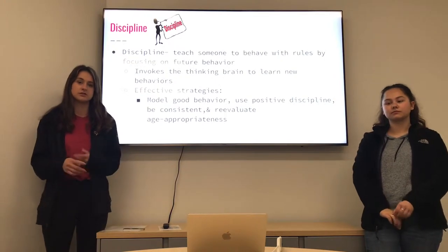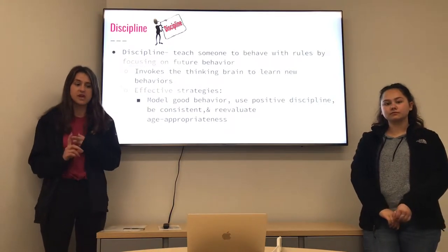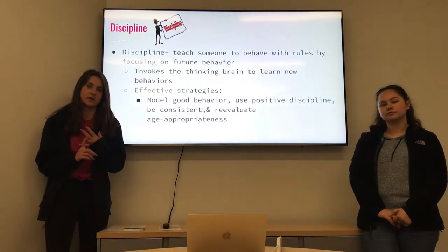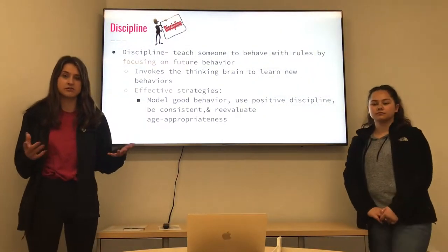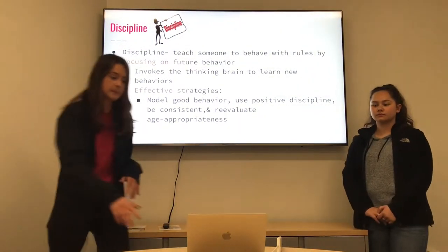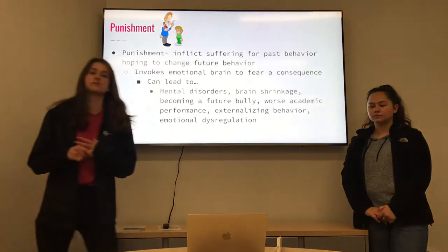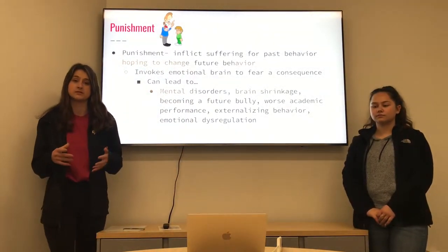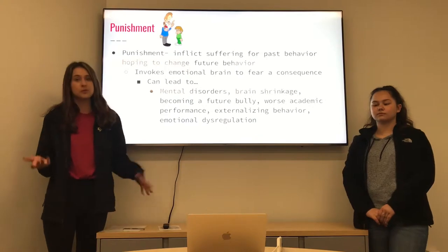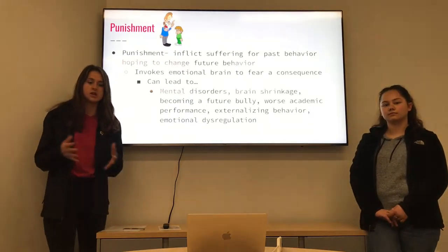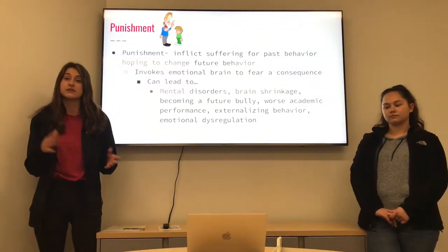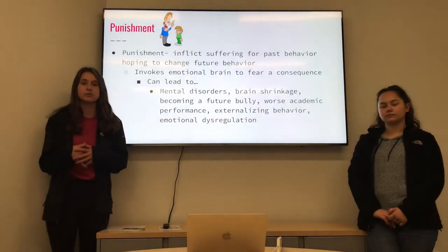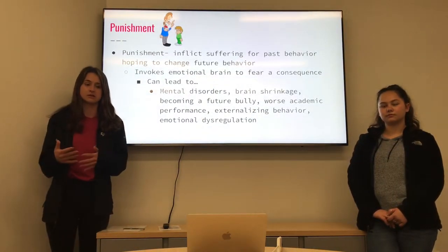Some effective strategies for discipline include modeling good behavior, using positive discipline, being consistent, and changing things up depending on their age. Punishment, on the other hand, is more about inflicting suffering or putting them down based on their past behaviors in the hope that they'll change future behaviors. Instead of engaging the thinking side of the brain, punishment goes more emotional and places fear on a consequence.